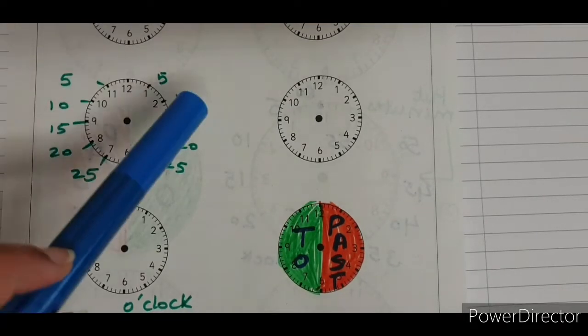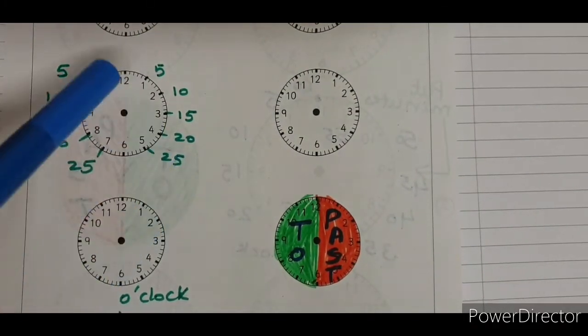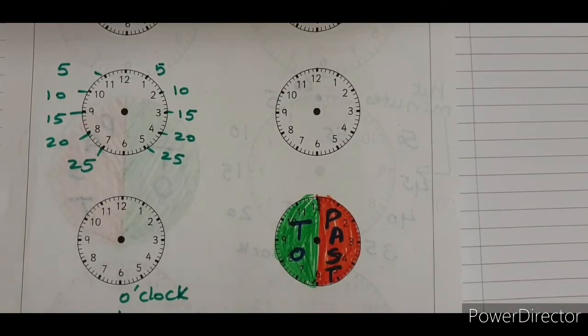So, these numbers 5, 10, 15, 20, 25 are going to help me read my minutes part of the time.